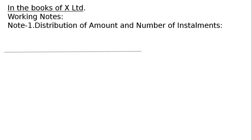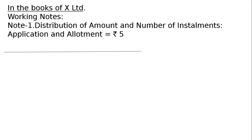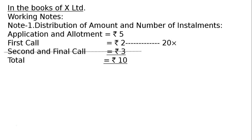In the books of X-Limited, working notes: distribution of amount and number of instalments — Application and Allotment: Rs.5, First Call: Rs.2, Second and Final Call: not called (uncalled): Rs.3, Total: Rs.10.